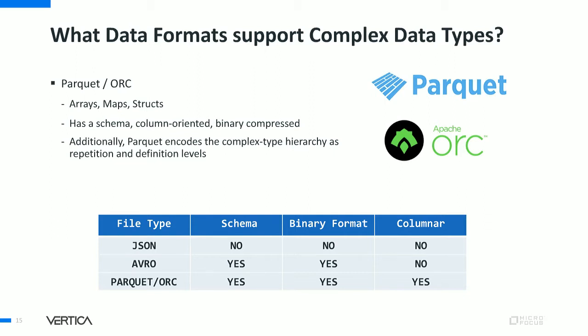The main difference between Parquet and ORC is only in how they represent complex types. Parquet includes the complex type hierarchy as repetition and definition levels. ORC uses a separate column at every parent of the complex type to represent nullness. Apart from that difference, Parquet and ORC have similar capabilities in terms of optimizations and compression techniques. To summarize: JSON has no schema and no binary format and is not columnar. Avro has a schema and a binary format but is not columnar. Parquet and ORC have a schema, a binary format, and are columnar.